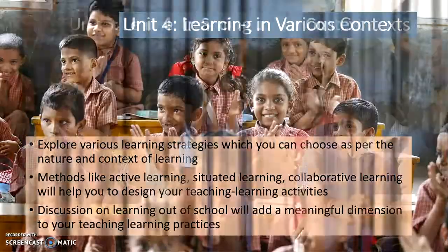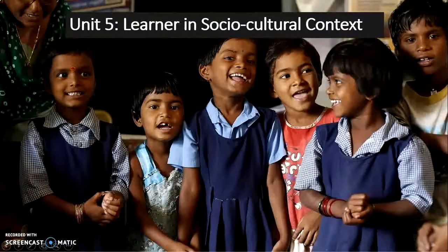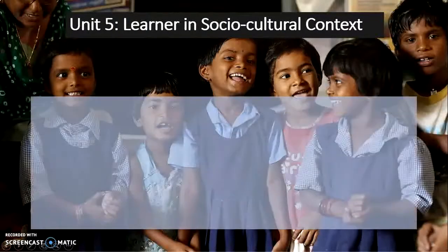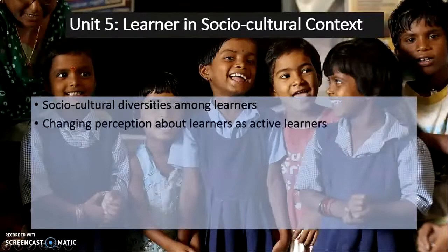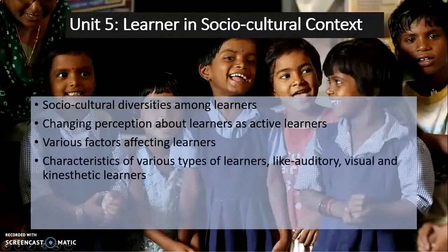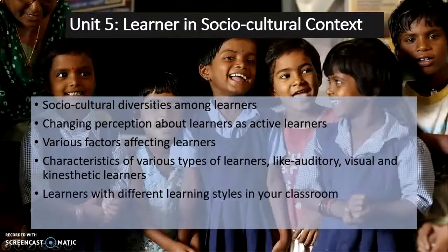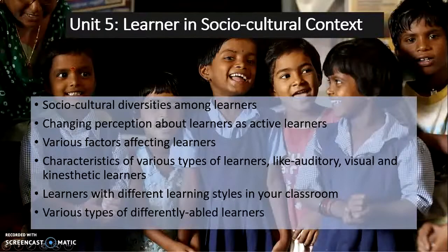Unit Five, Learner in Socio-Cultural Context, discusses socio-cultural diversities among learners, changing perceptions about learners as active learners, various factors affecting learners, characteristics of different types of learners such as auditory, visual, and kinesthetic learners, different learning styles in the classroom, and various types of differently-abled learners. This unit helps you identify and know your learners.